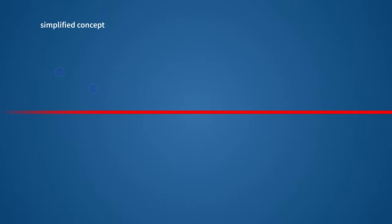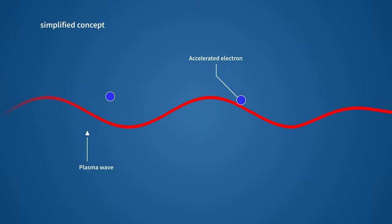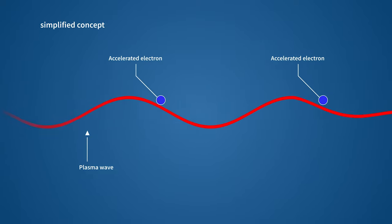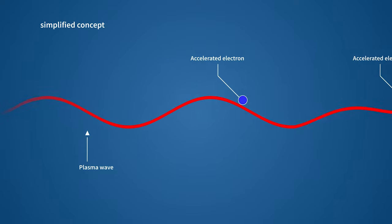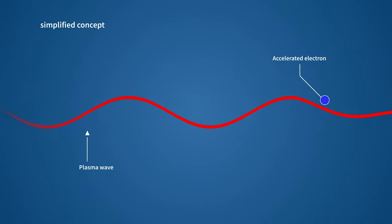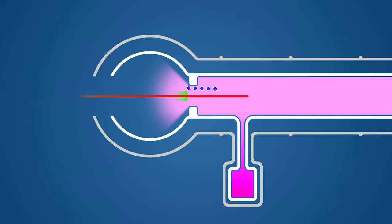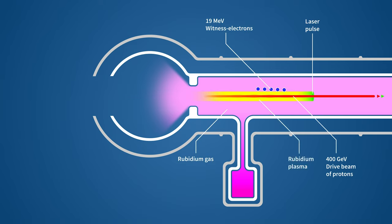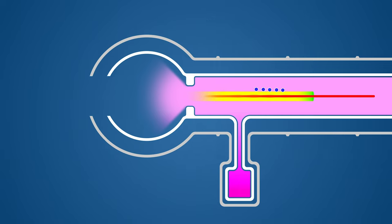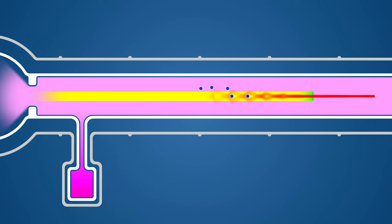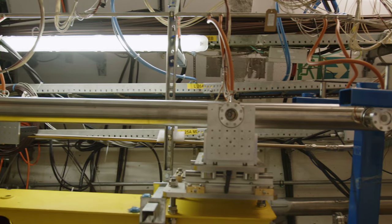So how does plasma wakefield acceleration work in principle? You have to imagine you have a lake which is the plasma and you have a beam which in the lake is the boat. This beam is the proton beam from the CERN SPS and it goes through the plasma and produces wakefields in the back. Then we have another beam which are the surfers and these are the electrons that jump on these waves and they are getting accelerated.